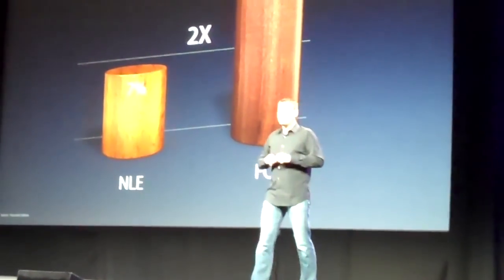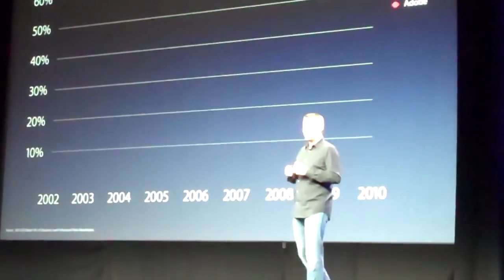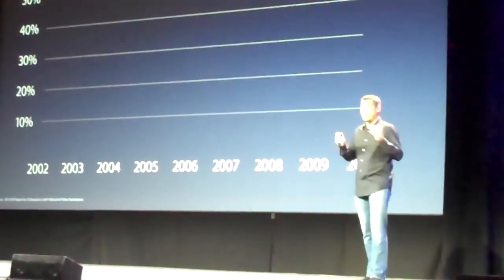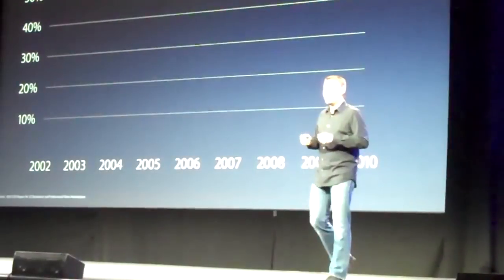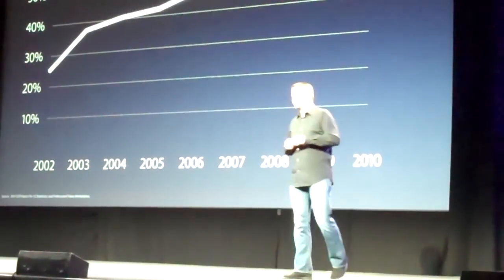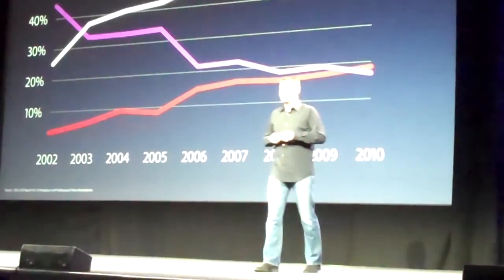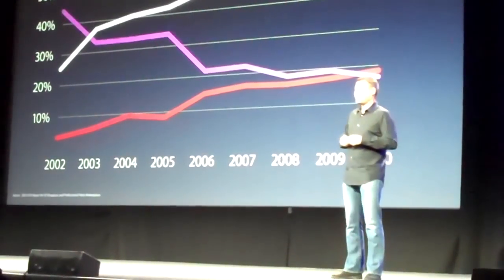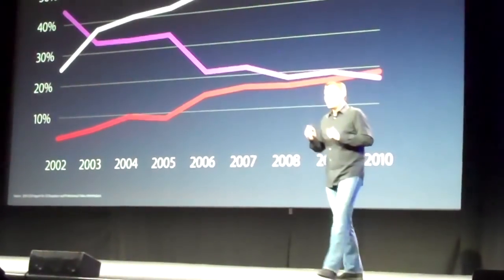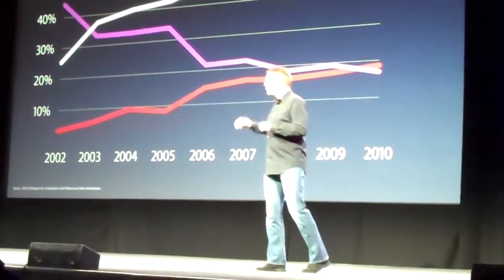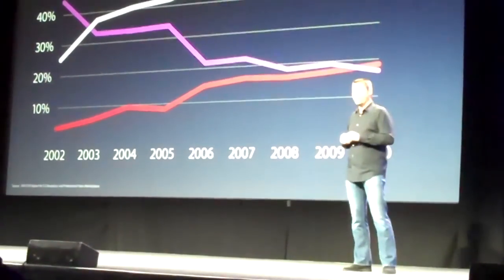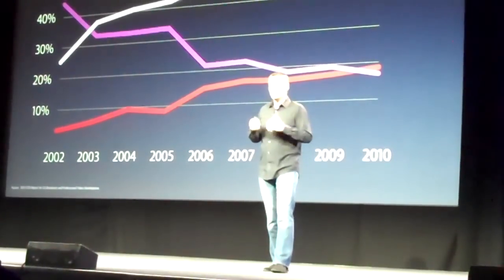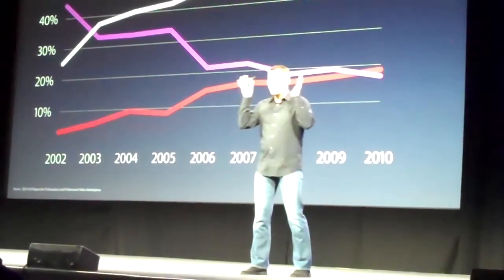So what does this mean in terms of where Final Cut sits with its competition? According to independent research, when the highest end of our marketplace — the broadcast and post-professional — is choosing a non-linear editor, they are overwhelmingly selecting Final Cut Pro. Where does that leave Adobe and Avid? They'd like you to believe they're competing with us. The truth is, they're in a race for second place. But that's not why we do what we do. We want to create great software — incredible user experience and great software that you guys can use.